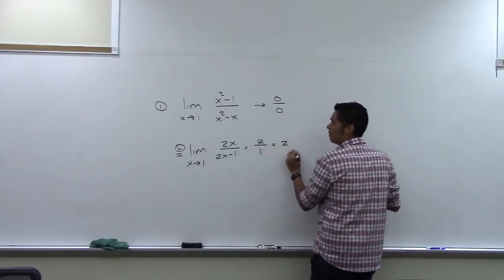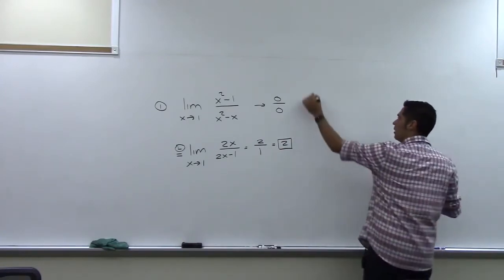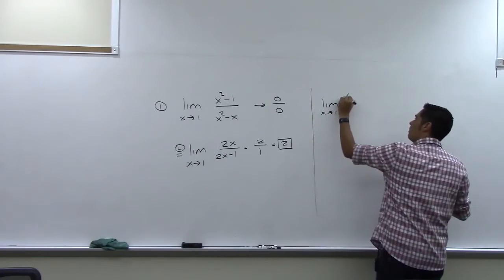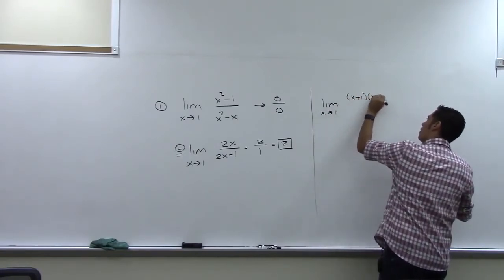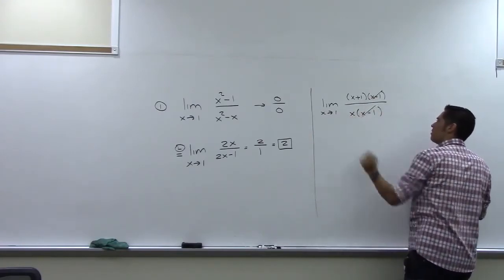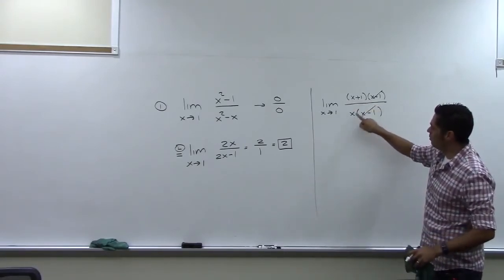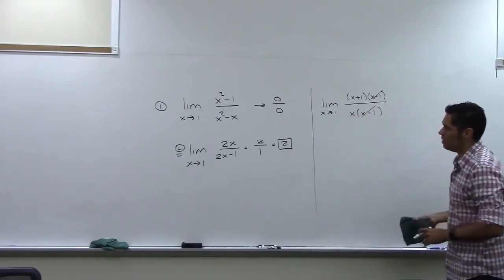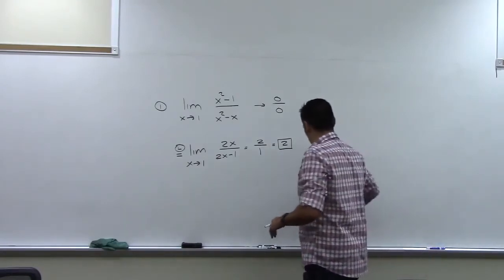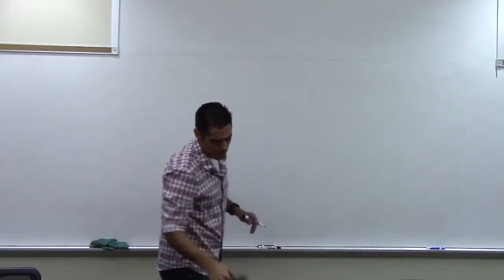The limit here is two. Now, to show what we would have done before: we would have factored the top as a difference of squares, factored the bottom using GCF, canceled the common factors, and plugged in one to get one plus one equals two — same answer. But with L'Hôpital's rule we were able to do that without using any algebra at all. Let's look at number three.